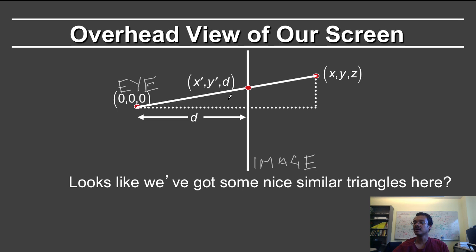Now the triangles are similar, so this triangle is similar to this whole triangle. And therefore, the length ratios should be similar. So I can say that d over x prime is equal to z over x.